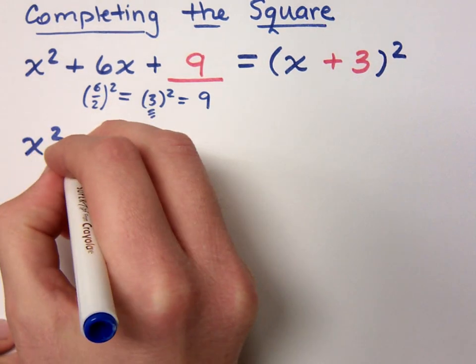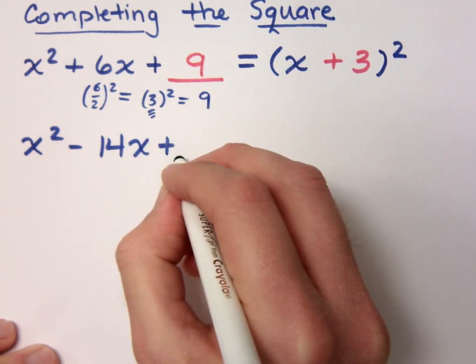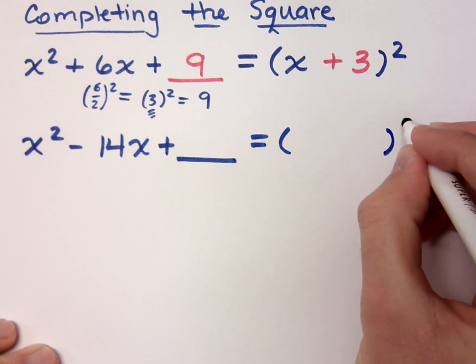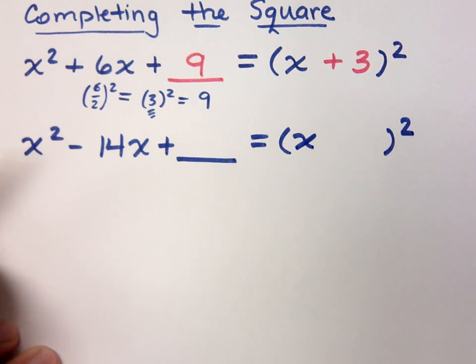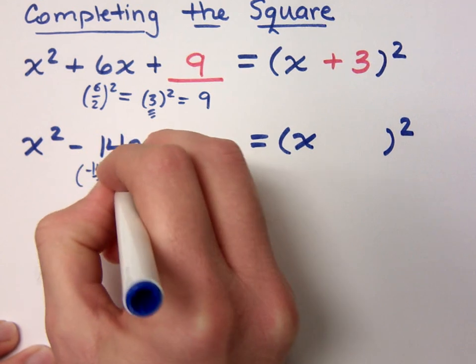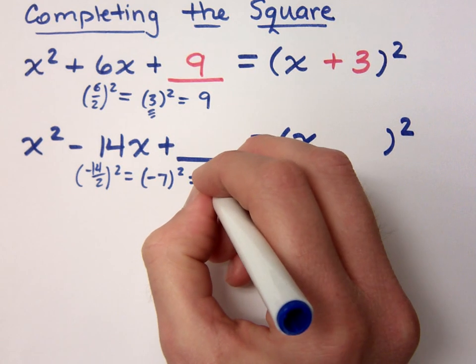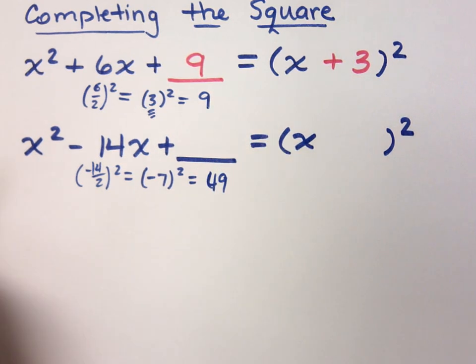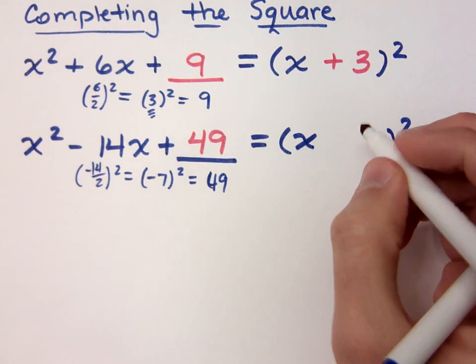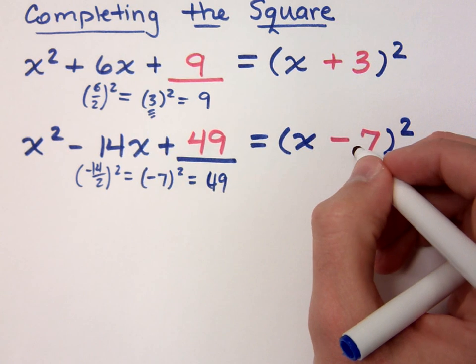For example, if I gave you this. If I said x squared minus 14x, what would I have to add here so that I create a perfect square over here? 49. If I take this coefficient, negative 14, divide it by 2 and square it, I get negative 7 squared, which is 49. So I get a 49 here, but what goes in the factored form? It's a minus 7, because you need that negative 7 to get the negative 14, right?